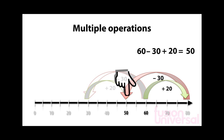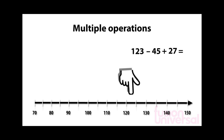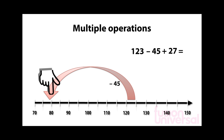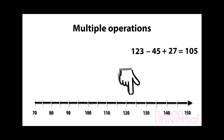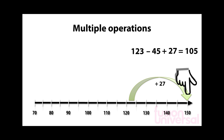The order in which we do the operations doesn't matter. We shall now show that there will be occasions when one way may be easier than the other. Let's look at the calculation 123 subtract 45 plus 27. Let's start at 123 and take away 45 to give 78. We then add 27 to give the answer 105. If we try a different order, by starting back at 123 and first adding 27, this is a much easier calculation, giving us 150.